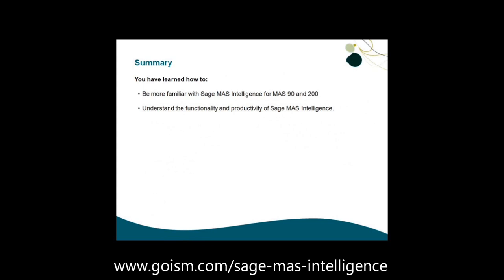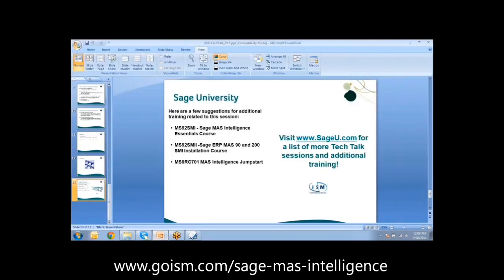That was a basic functionality overview of working with Sage MAS Intelligence, the report designer, and its functionality — a high-level look at what it can do and the possibilities it offers. There are additional training courses available that will help you dig in a lot deeper: the Sage MAS Intelligence Essentials course, the Sage MAS Intelligence Installation course, and the Sage MAS Intelligence Jumpstart. These are three well-written courses. There is also documentation with exercises to help you learn how to use it better that can be emailed to you.